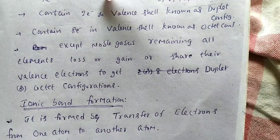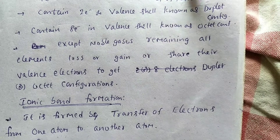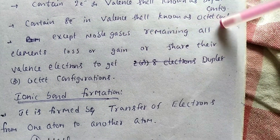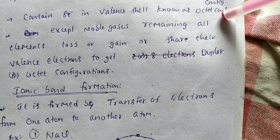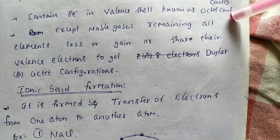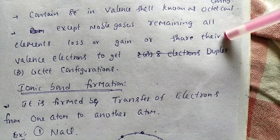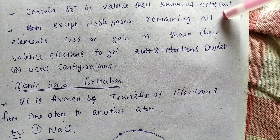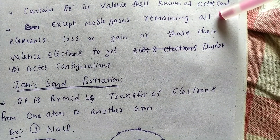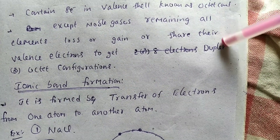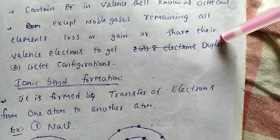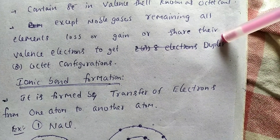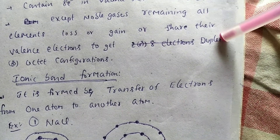To summarize: containing two electrons in the valence shell is known as duplette configuration; eight electrons in the valence shell is known as octet configuration. Except noble gases, all remaining elements lose, gain, or share their valence shell electrons to get duplette or octet configurations — that is, the nearest inert gas configuration.